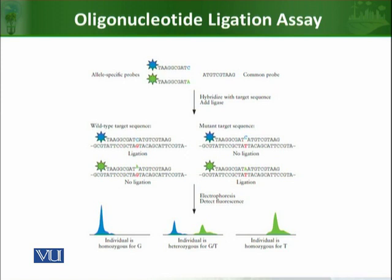Then we add a wild type probe in the first reaction, and in the second reaction we add a mutant target probe. In both tubes we add the common probe. So tube one will contain wild type target probe plus common probe, and tube two will contain mutant target probe plus common probe.